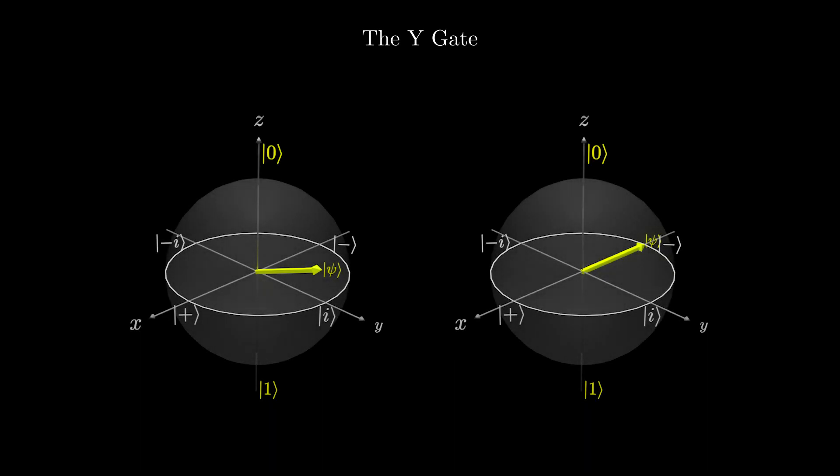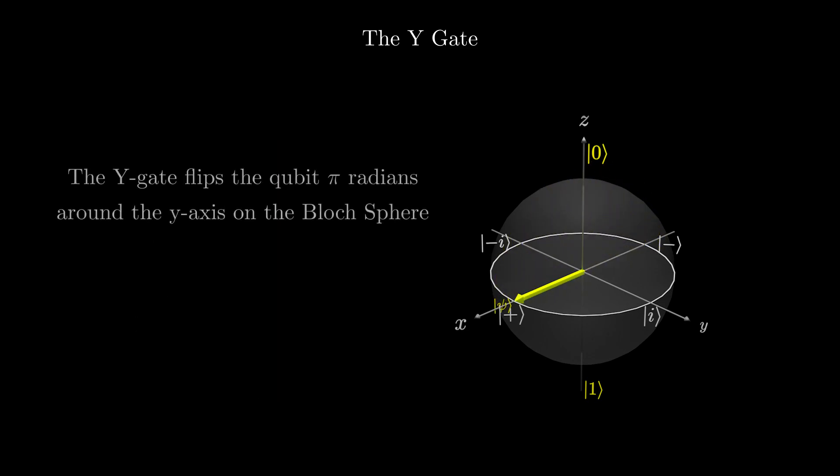Now, let's have a look at the Y gate. Here are some examples of the Y gate transformation. As you can see, it does the same thing as the X gate, but instead it rotates the qubit state 180 degrees or pi radians around the Y axis.